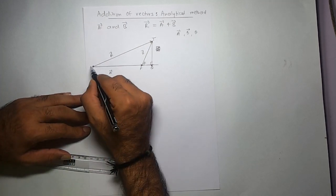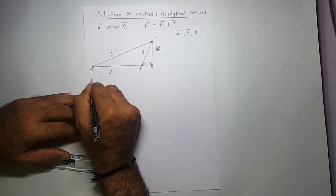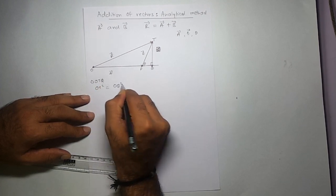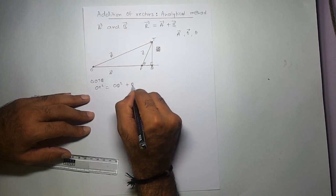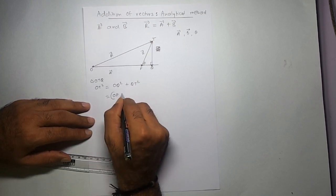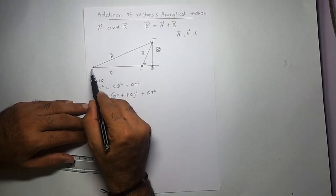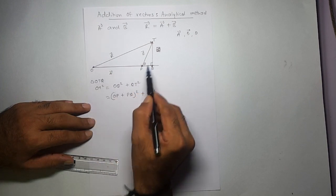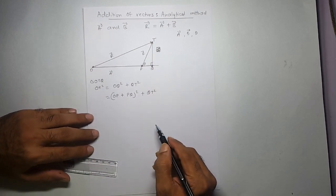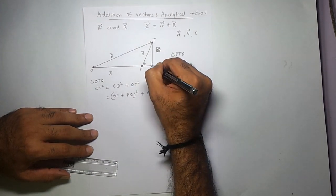Now I'll use a little geometry and trigonometry. I want to find out OT, which is vector R. Looking at triangle OTQ: OT² is equal to OQ² plus QT². And OQ² equals (OP + PQ)² plus QT².